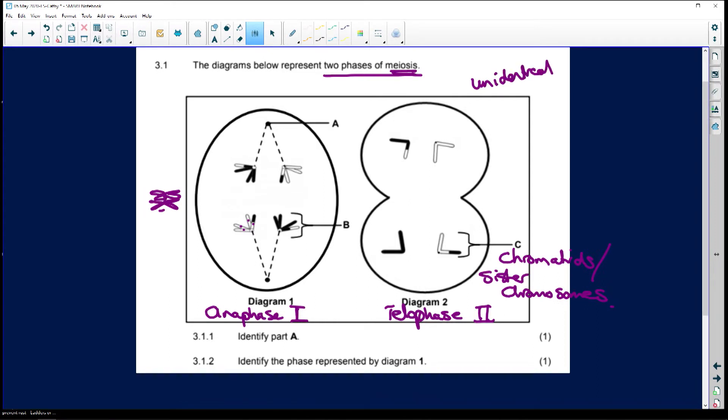Now if I look at diagram two, anaphase has already happened, so this becomes telophase and it's telophase two. And how do I know that it's telophase two? Because I had my sister chromatids here.